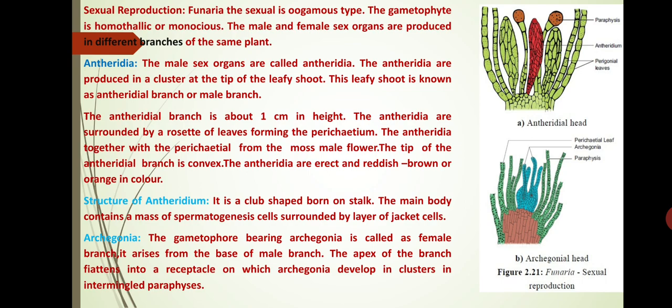Next we discuss about sexual reproduction in Funaria. Sexual reproduction is oogamous type. The gametophyte is homothallic or monoecious. The male and female sex organs are produced in different branches but on the same plant. The male sex organs are called antheridia. Antheridia are produced in clusters at the tip of the leafy shoot. This leafy shoot is known as the antheridial branch or male branch. The antheridial branch is about one centimetre in height.